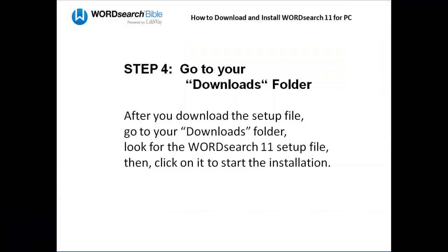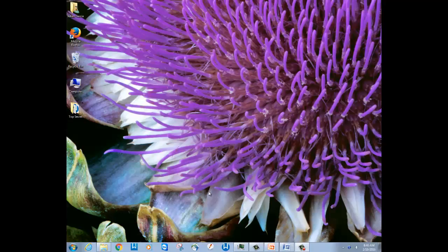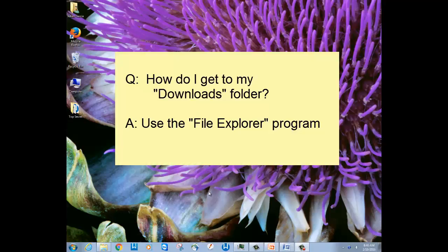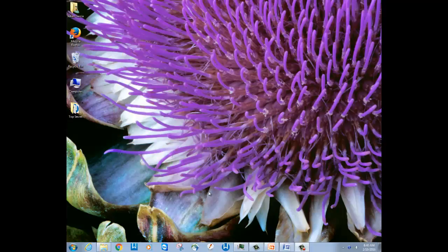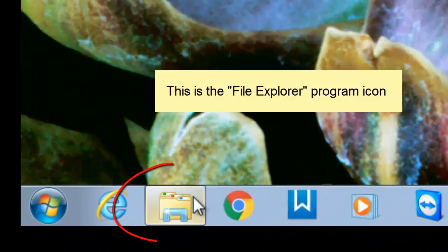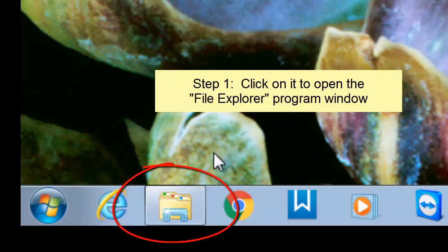Now that you have downloaded the WordSearch 11 setup file, you only have to do a few more easy things. Number one, you need to go to your downloads folder. One easy way to find your downloads folder is to use the Windows File Explorer program. To open the File Explorer program, look for this icon here at the bottom of your computer screen, then click on it.